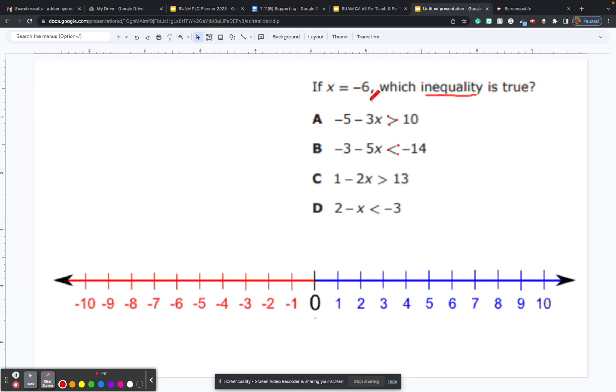If x is equal to negative 6, which inequality is true? Well, the quickest and probably easiest way is to substitute the value in. If x is negative 6, any place I see an x, I would just plug in negative 6.